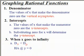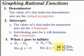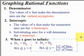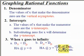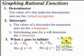The second case is when the degree of the numerator is equal to the degree of the denominator. In this case, the horizontal asymptote will be y equals the leading coefficient of the numerator over the leading coefficient of the denominator. The third and final case is when the degree of the numerator is greater than the degree of the denominator — in this case, there will be no horizontal asymptote.